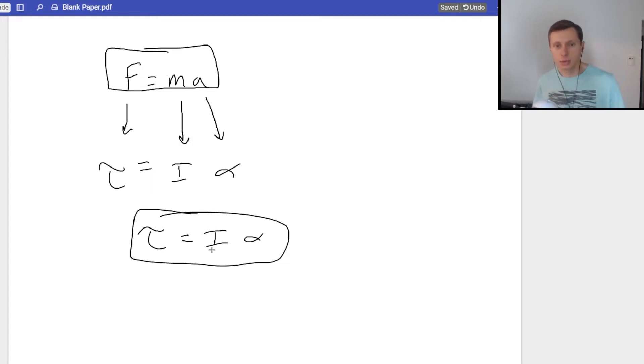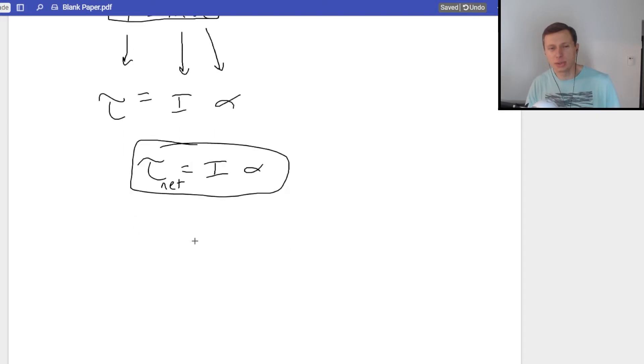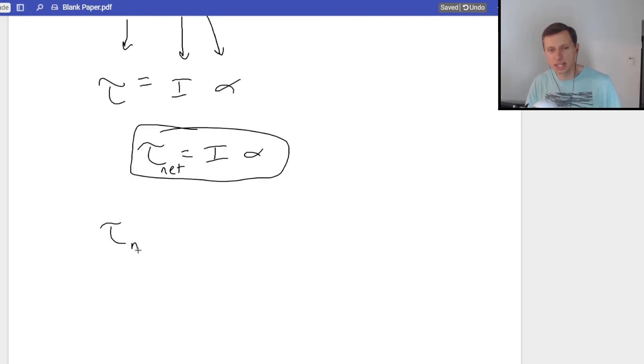And another thing to note, this is not just F, in the same way this is not just torque. This is the net torque. Why is that important? Well, we're going to be combining two things now. Remember earlier when I said net torque is equal to all the torques going counterclockwise minus the torques going clockwise? Now we're going to set that equal to I times alpha.